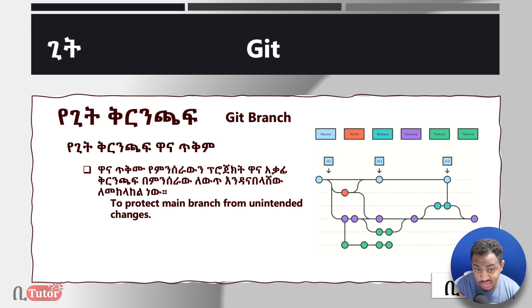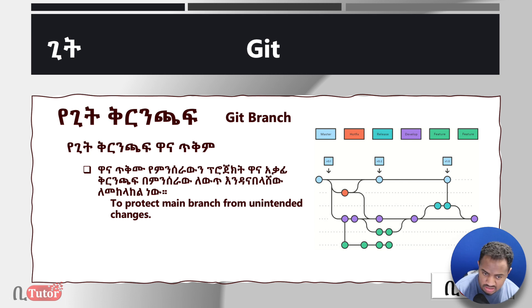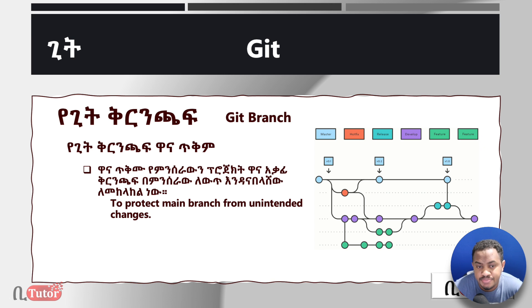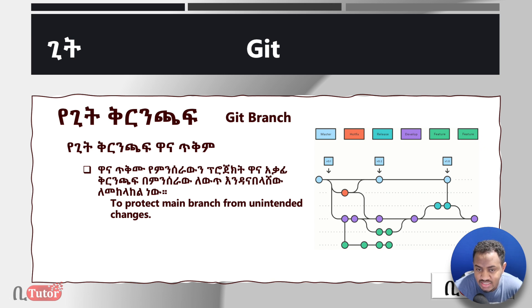So the branch will protect the main branch. This branch is a very important tool. There is a naming convention called the branch SMOJ. It is a very important tool to develop a trend in the developer world. The branch is a very important tool to use.